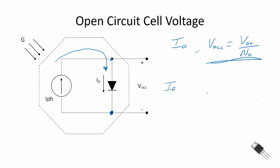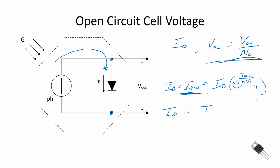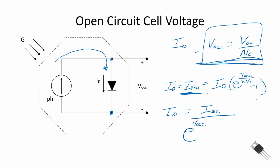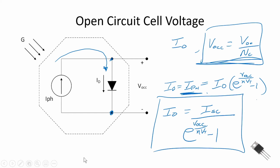At open circuit, I_diode = I_pH = I_0 times (e raised to V_D_open-circuit-per-cell divided by n·V_T, minus one). Since I_pH equals the short circuit current, we can solve for the reverse saturation current I_0: it equals the short circuit current divided by (e raised to V_OC-per-cell divided by n·V_T, minus one), where V_OC-per-cell is the panel's open circuit voltage divided by the number of cells. Now we have all the information to create the simplified equivalent circuit.